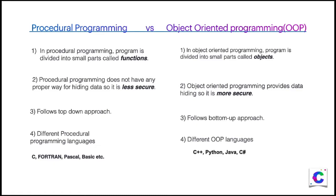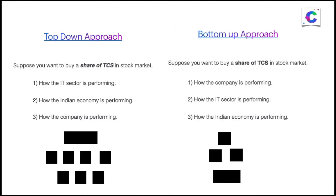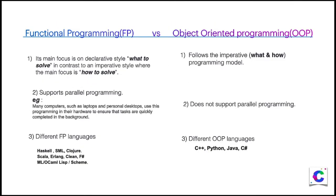Object oriented programming provides data hiding through encapsulation and abstraction, making it more secure, whereas procedural programming does not have a proper way of hiding data and is less secure. Procedural programming follows a top-down approach — you see the complete picture of the IT sector first, then the economy, then the company — while object oriented programming follows a bottom-up approach. Different procedural programming languages are C, Fortran, Pascal, and BASIC, whereas object oriented programming languages like C++, Python, Java, and C-sharp support classes and objects.